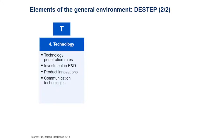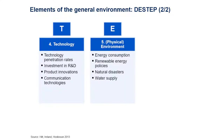Next we look at technology, starting broadly but going very specific into technology coming up in the industry. We look at technology penetration rates, investment in R&D, what competitors are doing, any innovations that come up, and also communication technologies — always with the aspect of new marketing methods or channels. Element number five is the physical environment: energy consumption, energy rates, renewable energy in countries, natural disasters that might threaten our business, and water supply — which in the food industry is very important.